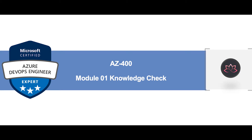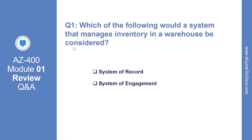In this section, we are going to go through Module 1 Knowledge Check. Let's look at the first question: which of the following would a system that manages inventory in a warehouse be considered? The correct answer is system of record. Systems that are providing the truth about data elements are often called systems of record.